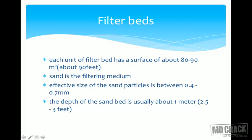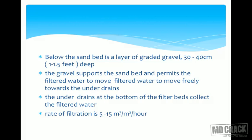The depth of the sand bed is usually about 1 meter — about the same as in the slow sand filter. Below the sand bed there is a layer of graded gravel, 30 to 40 centimeters deep, also about the same as the slow sand filter. The gravel supports the sand bed and permits filtered water to move freely towards the under drains, which collect the filtered water. Basically, this filter box of the rapid sand filter is almost the same as that of the slow sand filter.